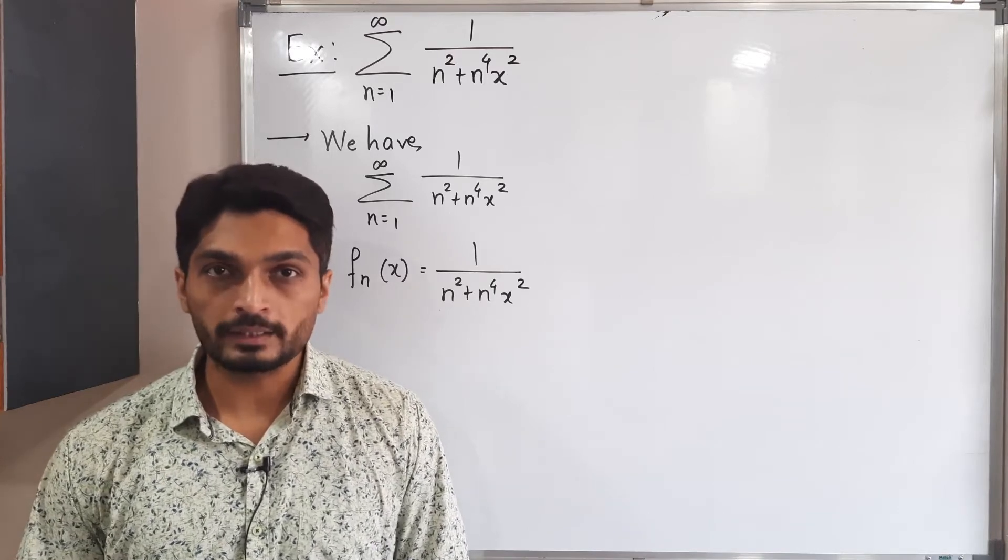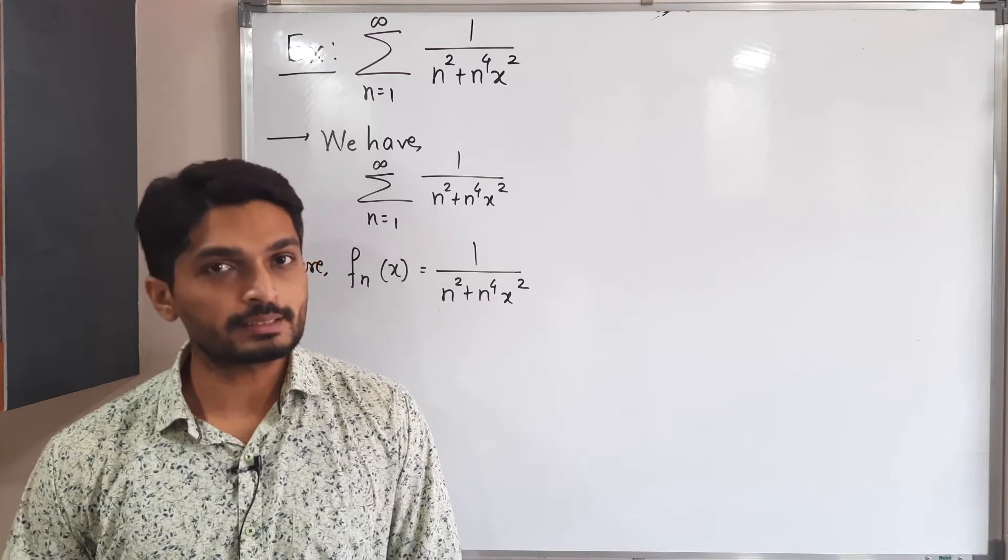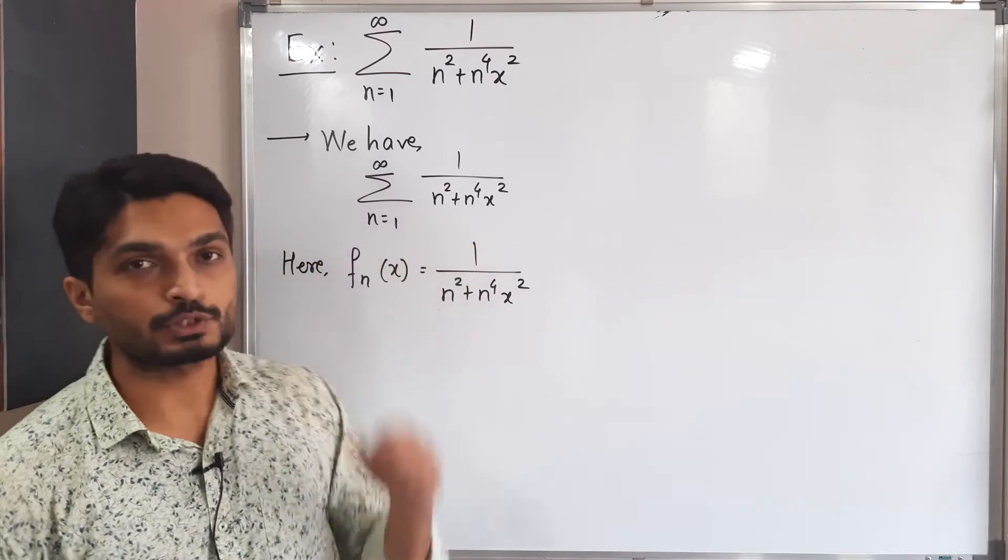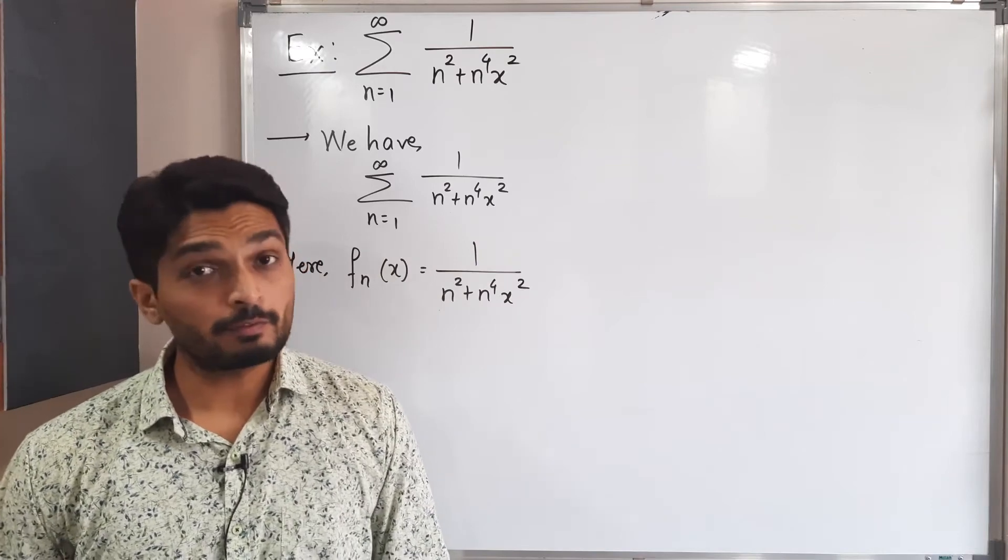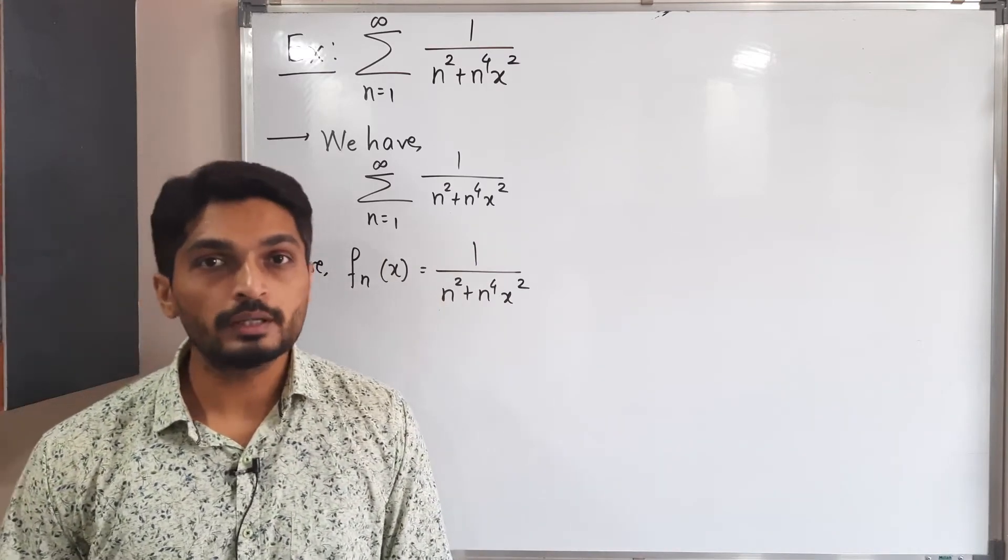We are going to prove that it converges uniformly on R. So let us consider the given series of function which we have already written here. Fn of x is 1 upon n square plus n raised to 4 x square.